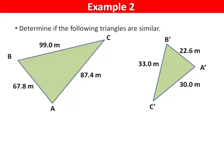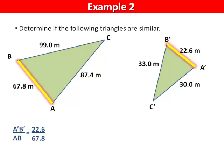Example 2. We are not given any of the angles, so we'll have to compare the side lengths. A'B' over AB is 22.6 divided by 67.8, which equals 0.3 repeated.